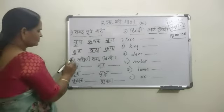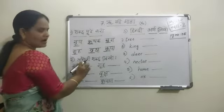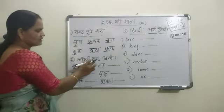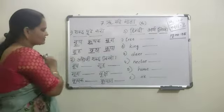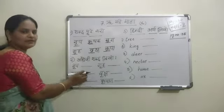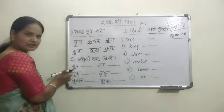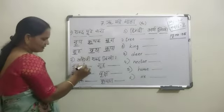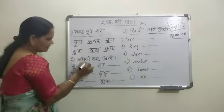Second exercise: Ka ki Ruu Matra — Angraji shabd likhe. Angraji means English. Write English words. The Hindi words are given, and we should write them in English. Na ki Ruu Matra — say Nru, Pa. Nrup means King. K-I-N-G. King.